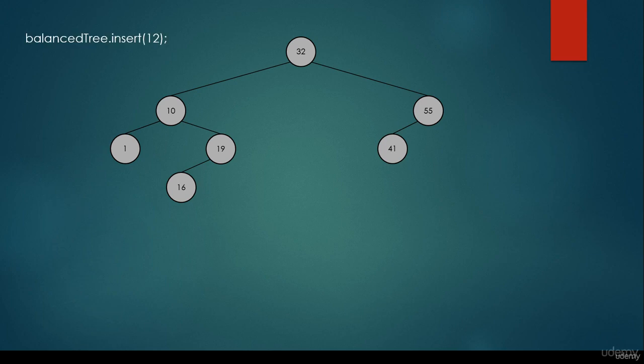For example, we would like to insert the 12. How do we insert? We start at the root node. The 12 is smaller than 32, so we go to the left. The 12 is greater than 10, so we go to the right. The 12 is smaller than 19, so we go to the left. Because the 16 doesn't have any left child, we are going to insert it here.